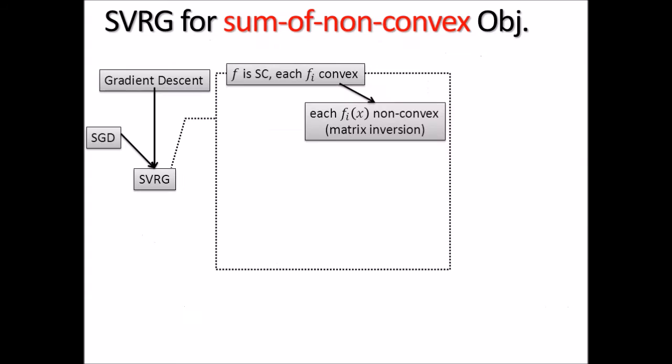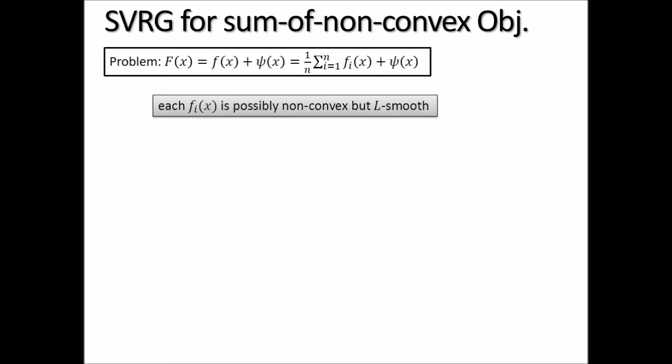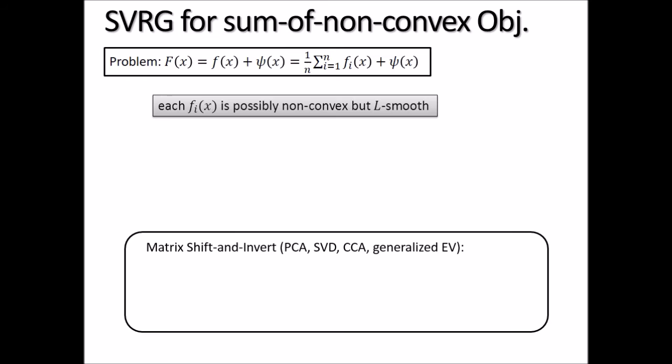The second result is: what if each fi is non-convex? Formally, we assume each function fi is non-convex but smooth. Here is one important application: the so-called matrix shift-and-invert problem, which has become the central problem used in all state-of-the-art stochastic PCA, SVD, CCA, and so on. In this problem, each fi has a form where ai is a feature vector and you subtract the inner product from the objective, making fi non-convex.